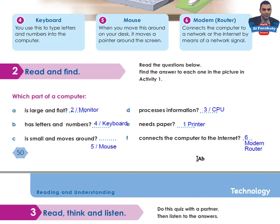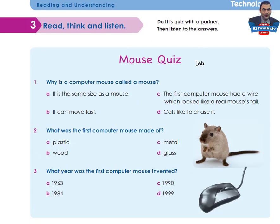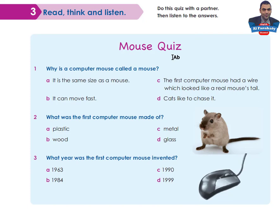Let's go to Activity 3: Read, Think and Listen. Do this quiz with a partner, then listen to the answers. Mouse Quiz. Question 1: Why is a computer mouse called a mouse? A. It is the same size as a mouse. B. It can move fast. C. The first computer mouse had a wire which looked like a real mouse's tail. D. Cats like to chase it.